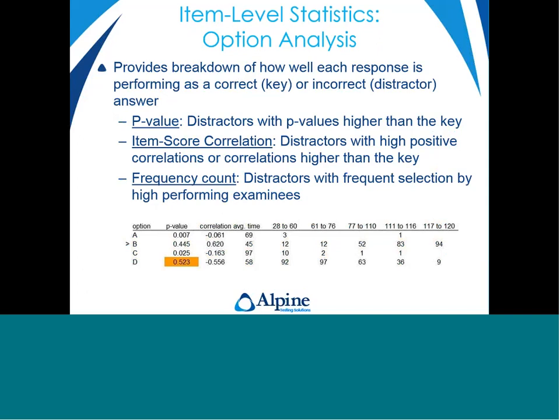In terms of option analysis, we're looking at how well each response option is performing — whether it's the correct key response or a distractor — looking at things that may be anomalous with regards to key values, item score correlation, response time, and frequency count. Of particular interest in option analyses are distractors that are attracting a large percentage of your highly performing candidates. Delving into that: is it a missed key, or is it just a really well-written item that has two solid options, one being the key and one being a strong distractor?